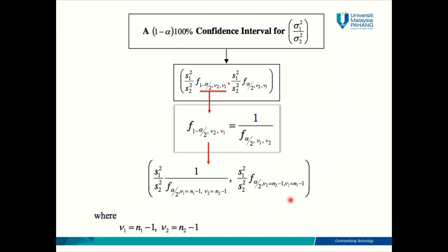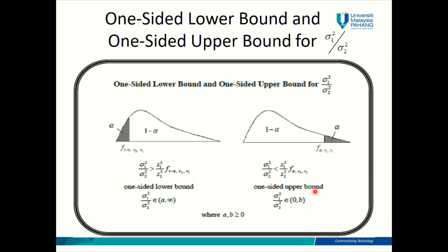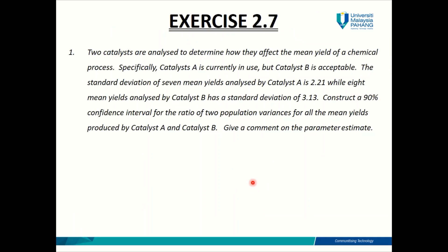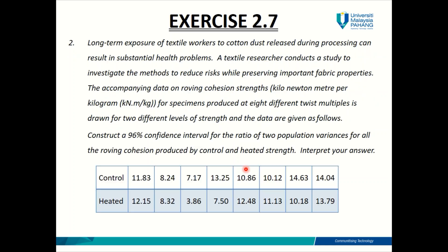I think that is it for this video. There will be a part 2 for chapter 2.7, so make sure you go and check that video out. In part 2, I'll be explaining one-sided lower bound and upper bound confidence intervals for ratio of population variances. Before I end, I encourage you to try out the exercises in your module — the answers are also provided. Go home and have fun with it. Do remember to check out chapter 2.7 part 2. See you in the next video.